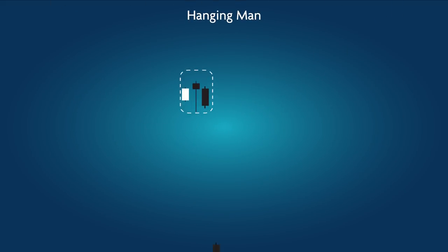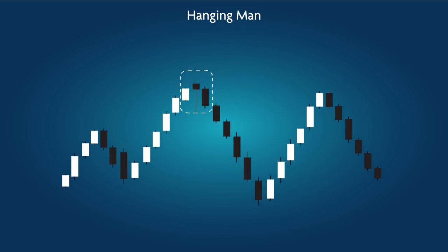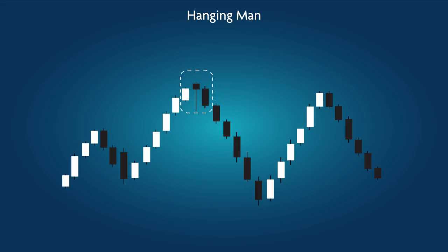Hanging Man: a bearish pattern formed within a short-term uptrend in which the stock price drops at the start of the candle's time interval but recovers and closes with a high price. The strong sales at the outset indicate the beginning of the end for buyer control.